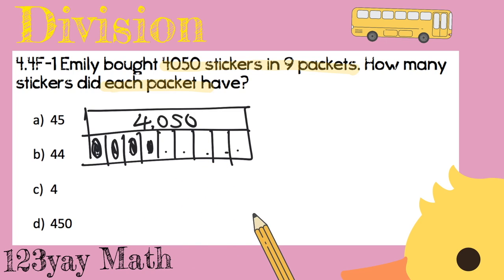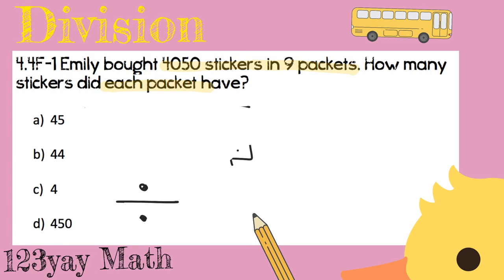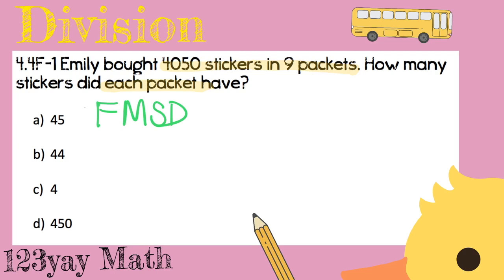So what operation are we going to use? Division — it's one of my favorites! The strategy we're going to use is Find My Scary Dog — or Find My Silly Dog, whatever you want. The important thing is that you use these letters: F for Find, M for Multiply, S for Subtract, and D for Drop.